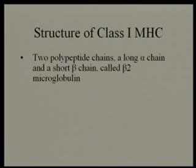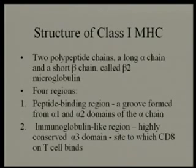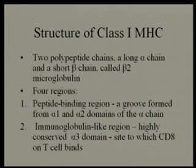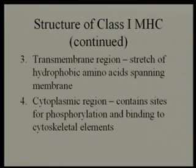There's a long alpha chain composed of three subunits and a short beta-2 chain. There are four regions: the peptide-binding region formed by the alpha-1 and alpha-2 domains — this is where the peptide and antigen would sit. The alpha-3 domain is an immunoglobulin-like region that is highly conserved, so you don't see many polymorphisms there. Importantly, this is the site to which the CD8 molecule binds — CD8 is expressed by T cells and binds to this portion. There is also a transmembrane region consisting of hydrophobic amino acids, and a cytoplasmic region containing a site for phosphorylation.